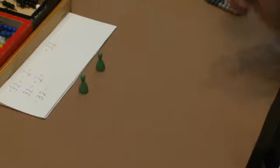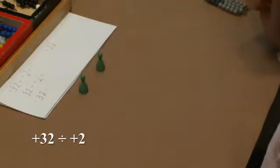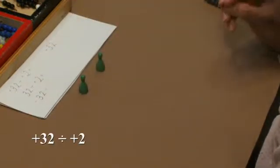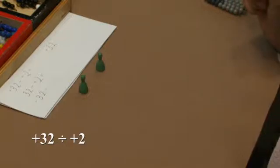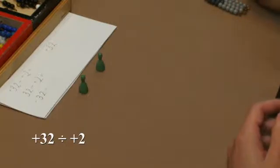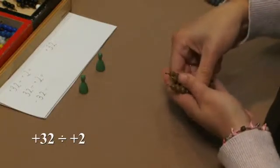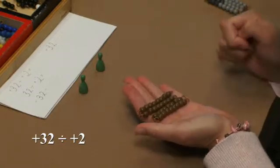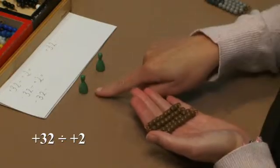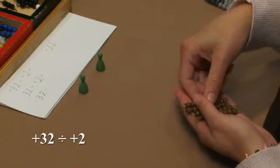We have some equations that I would have the students write down. The first one is positive 32, and I'm going to divide that by positive 2. So I would take 32 using four 8-bars, and I'm going to divide that evenly amongst my two Skittles.